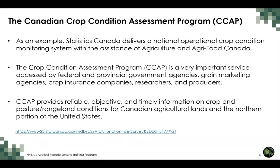A specific example of these operational systems is the Canadian Crop Condition Assessment Program, or CCAP. CCAP is delivered by Statistics Canada to operationally monitor the entire agricultural extent of Canada, with Agriculture and Agri-Food Canada assisting in delivering this system. CCAP is an incredibly important service accessed by all levels of government — federal and provincial — as well as marketing agencies, crop insurance companies, researchers, and agricultural producers themselves.